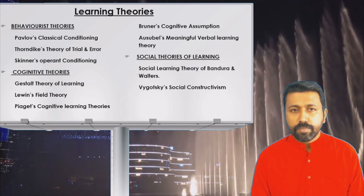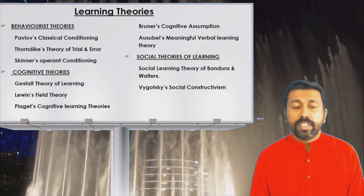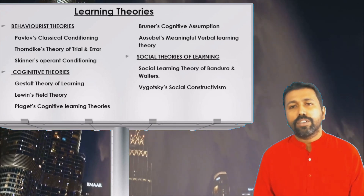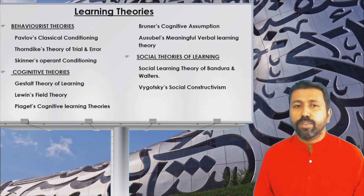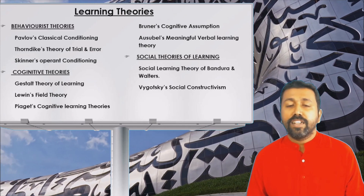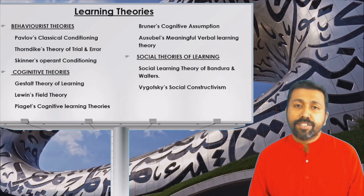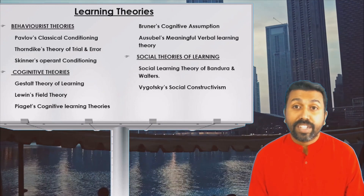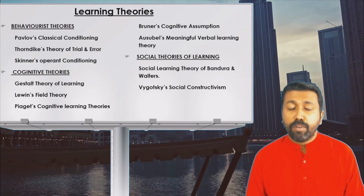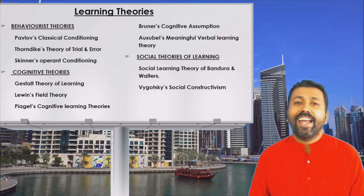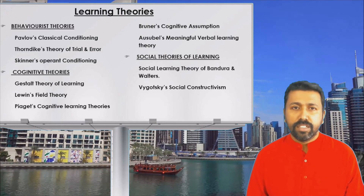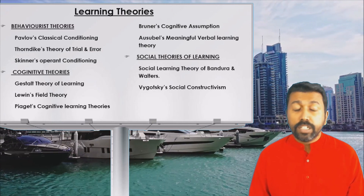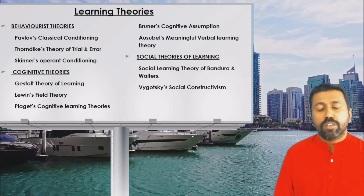Moving to the next topic: the different learning theories. There are behaviorist theories, cognitive theories — where cognitive psychologists have given a lot of contribution — and social theory. Under behaviorist theories, we have Pavlov's classical conditioning, Thorndike's theory of trial and error, and Skinner's operant conditioning. These are given maximum importance for the study of behavior.